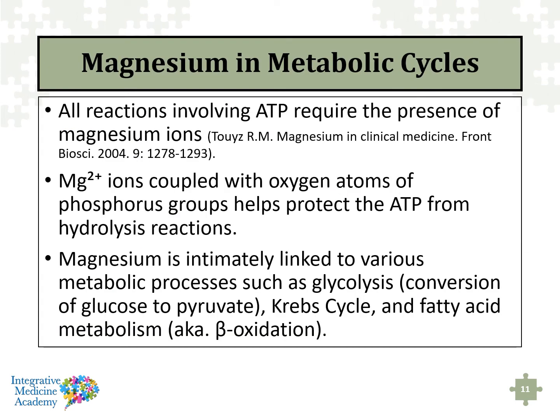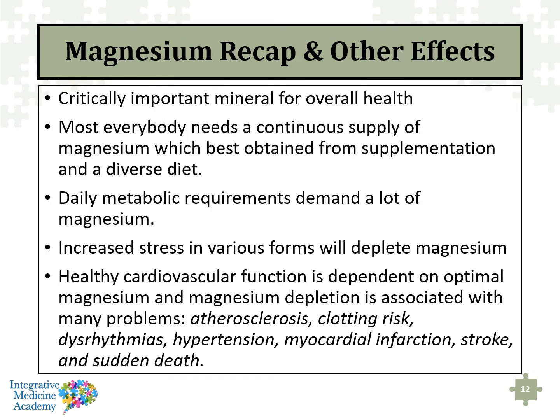All reactions involving ATP actually require the presence of magnesium ions. Magnesium ions coupled with oxygen atoms of the phosphate groups help protect the ATP from hydrolysis, because these chemicals can be broken down pretty quickly if they're not stabilized by minerals like magnesium. Magnesium is intimately linked to various metabolic processes such as glycolysis, Krebs cycle activity, and fatty acid metabolism, and it is critical for the stabilization of ATP within our mitochondria.